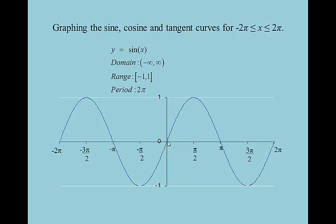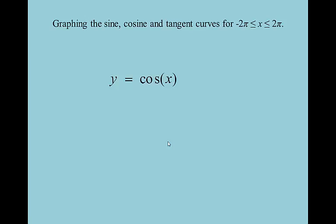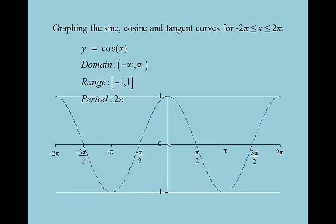Next will be y = cosine x, and it's going to look really familiar. It pretty much looks the same — the only difference is it's offset a little bit. Domain is still negative infinity to infinity; you can put anything you want in for x and hit cosine and you'll return a value. The range is again negative 1 to 1. The period is 2π. I like where it crosses the y-axis up here at a max, and then I follow it until it appears again — from 0 to 2π. So our period is 2π.